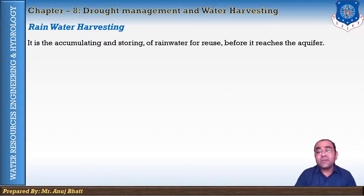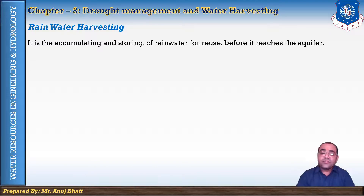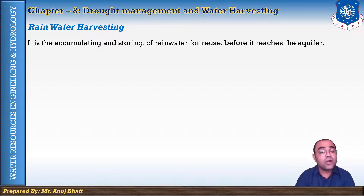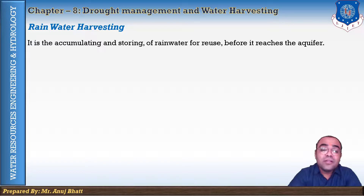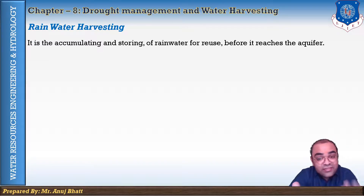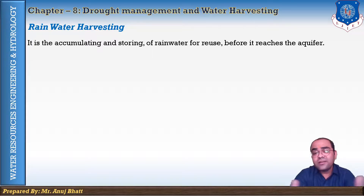Due to rapid urbanization, infiltration of rainwater into the subsoil has decreased drastically and recharging of groundwater has been damaged. It is therefore imperative to take adequate measures to meet the drinking water needs of the people, besides irrigation and domestic needs.